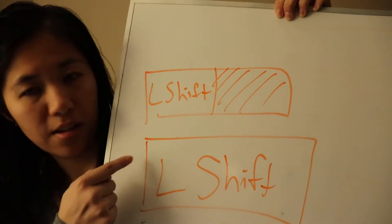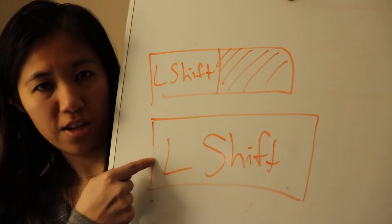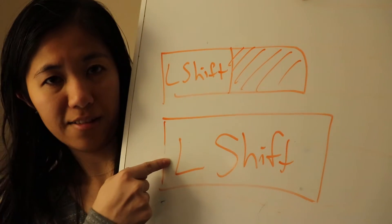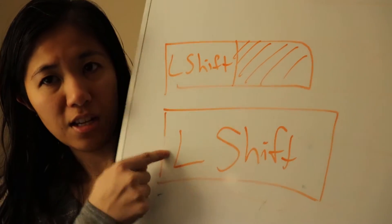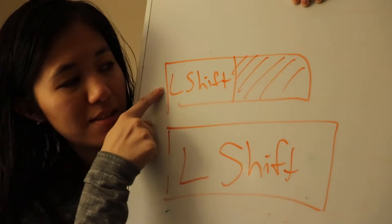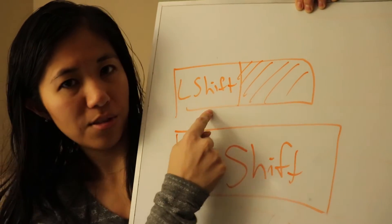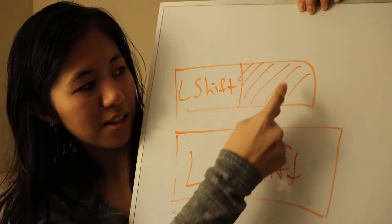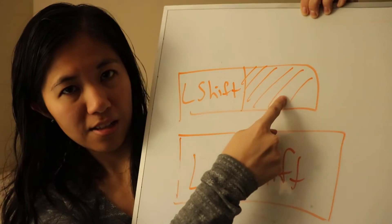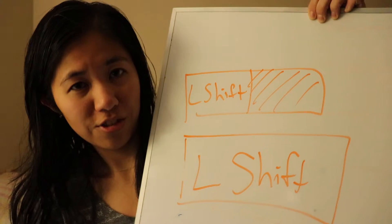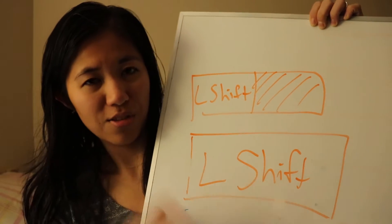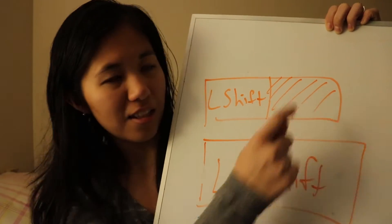Now we'll talk about the left shift key. This is a normal ANSI left shift key. This is an ISO left shift key — it's split into two different keys, and this additional key can be used in other languages that need an extra key.